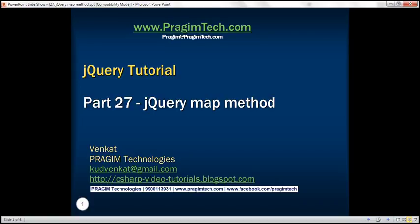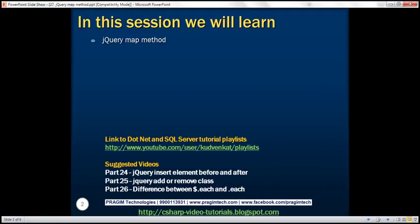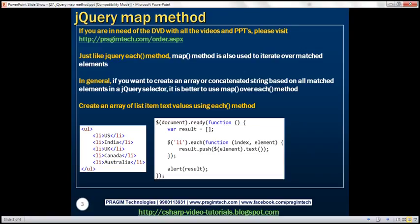This is part 27 of the jQuery tutorial. In this video, we'll discuss the jQuery map method. Just like the jQuery each method, the map method is also used to iterate over matched elements. In general, if you want to create an array or concatenated string based on all matched elements in a jQuery selector, it's better to use map over each method.